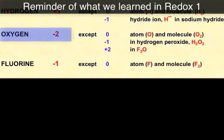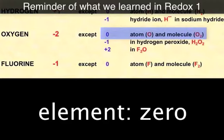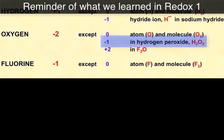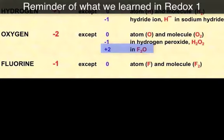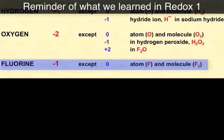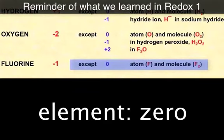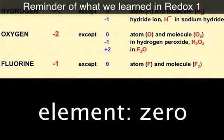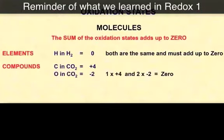Oxygen will always be minus two, except when forming an element O2 where it will be zero. In hydrogen peroxide it's minus one. In something like F2O, oxygen will be plus two so that fluorine can be minus one. Fluorine is the most electronegative element in the periodic table, so it will always be minus one whatever it's paired with, except when it's an element, where it has an oxidation state of zero.